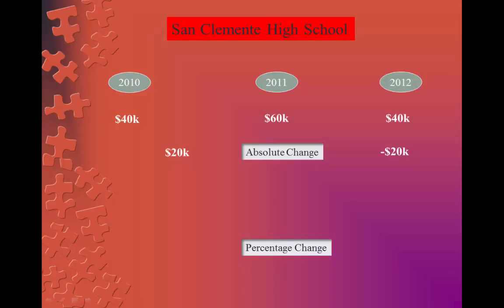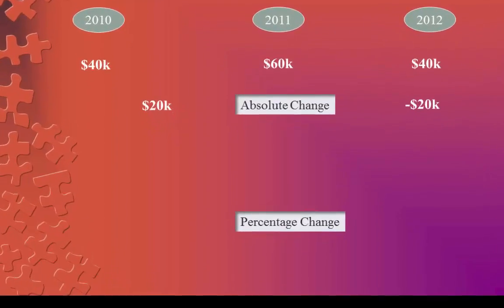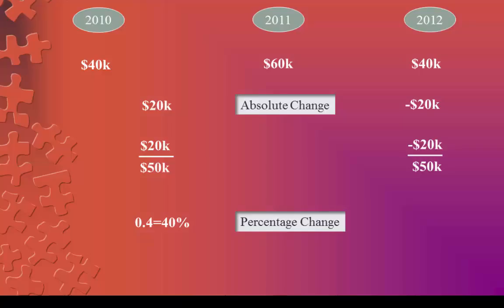Here is the same example using the midpoint formula. The absolute changes are the same as before, but now we divide by the midpoint to get the percentage change. For the budget increase, we divide $20,000 by $50,000, which is the midpoint between 40 and 60. You can calculate this by adding 40 and 60 and dividing the result of 100 by 2. The percentage change comes out to 40%. For the decrease from 2011 to 2012, we get an absolute change of negative $20,000 and divide by the midpoint between 60 and 40, which is again 50. As a result we get a percentage change of negative 40%.